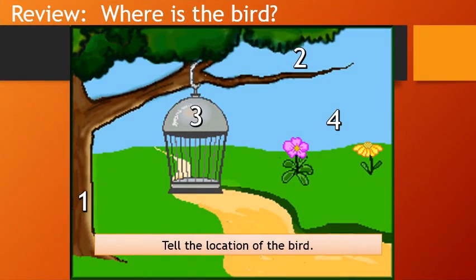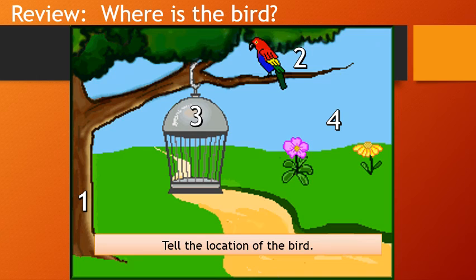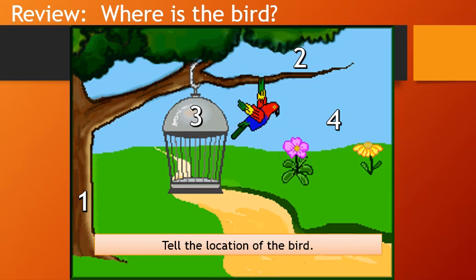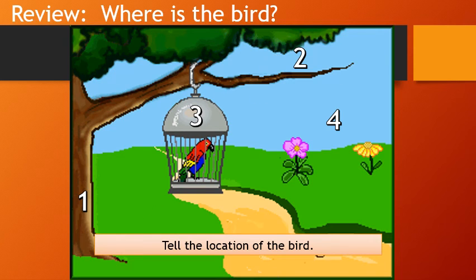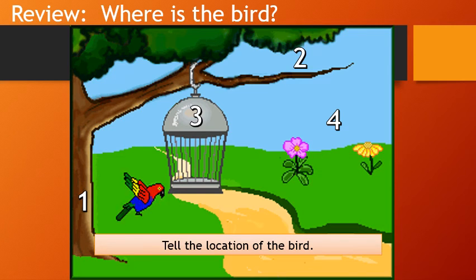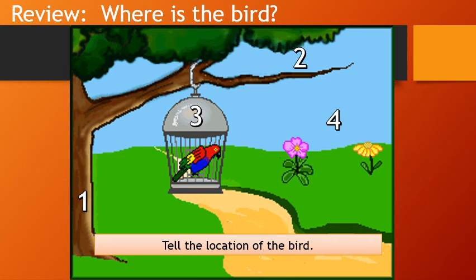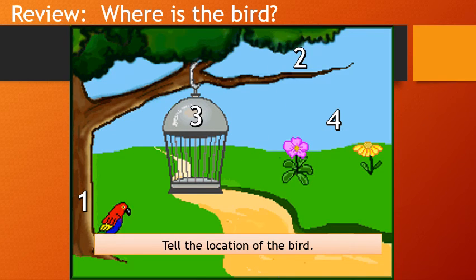Now, let's have a short review. I want you to tell the position of the bird — first position, second position, third position, and fourth position. Tell me the location or position of the bird by identifying the reference point.